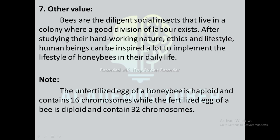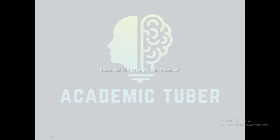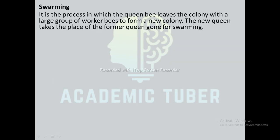The unfertilized egg of a honeybee is haploid and contains 16 chromosomes, while the fertilized egg is diploid and contains 32 chromosomes. The drone bee hatches from an unfertilized egg, while queen and worker bees hatch from fertilized eggs.